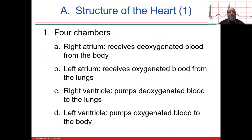The right atrium receives all the blood from all the tissue — upper, lower, and from the heart muscle itself that has already used up its oxygen — sending it back to the lungs. The left atrium receives the oxygenated blood from the lungs. The right ventricle pumps the deoxygenated blue blood to the lungs.